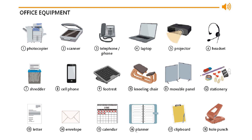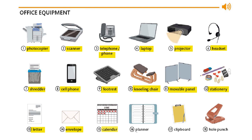Office equipment vocabulary. Photocopier, scanner, telephone or phone, laptop, projector, headset, shredder, cell phone, footrest, kneeling chair, moveable panel, stationery, letter, envelope, calendar, planner, clipboard, hole punch.